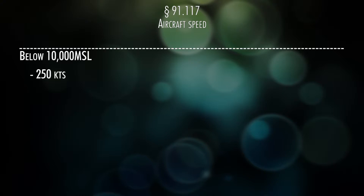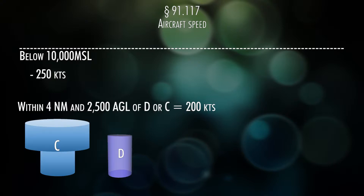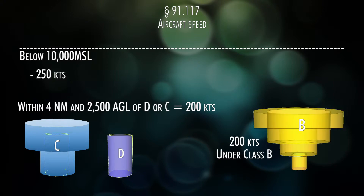91.117 talks about aircraft speeds. The maximum speed below 10,000 feet MSL is 250 knots. Within 4 miles of Class Charlie or Delta airspace and up to 2,500 feet AGL, the speed is 200 knots. The airspeed below Class Bravo airspace — below the shelves — is 200 knots as well.